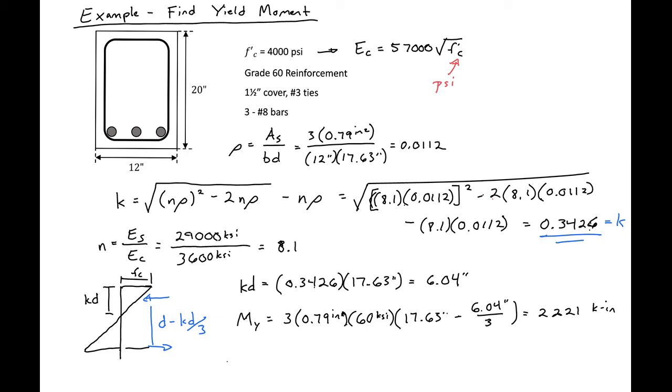And then we can find our yield curvature as well. And our yield curvature is just going to be our yield strain, 0.0021 divided by d, 17.63 minus kd, 6.04. And this will give us a yield curvature of 1.79 times 10 to the negative fourth radians per inch.